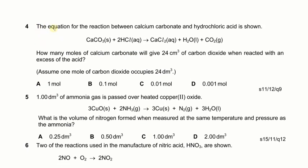Next question: the equation for the reaction between calcium carbonate and HCl is shown. How many moles of CaCO₃ will give 24 cm³ of CO₂? First convert the volume to moles: 24 cm³ ÷ 24,000 = 0.001 moles of CO₂. According to the equation, the mole ratio of CO₂ to CaCO₃ is 1:1, so 0.001 moles of CaCO₃ are needed. The answer is D.